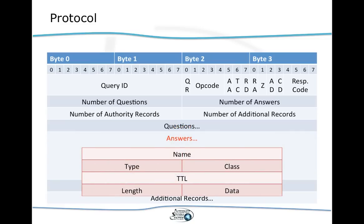Answers are a little more complex. We again have the name to which the answer applies, the type, and the class — essentially what we had in the query. Each answer or resource record also contains a TTL telling us how long the record is valid, then a length field, and then the respective data that goes with that answer.